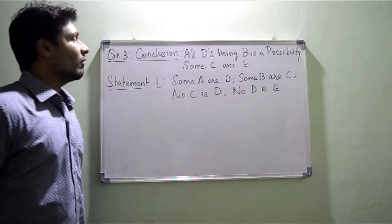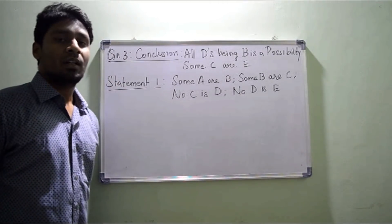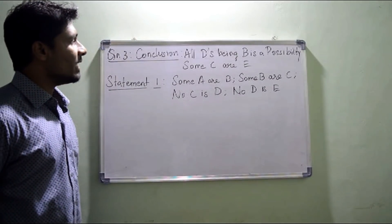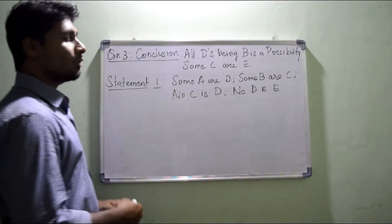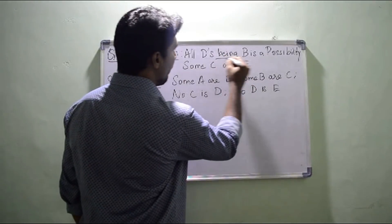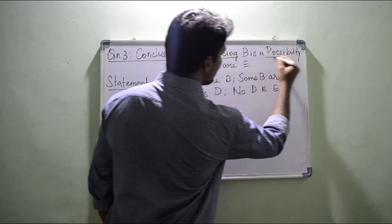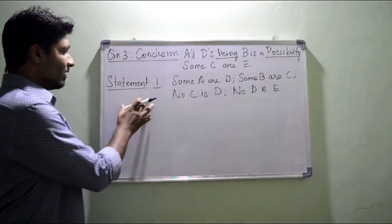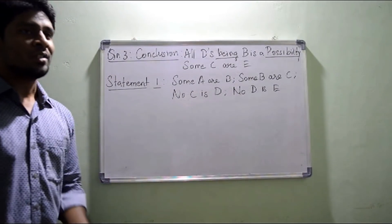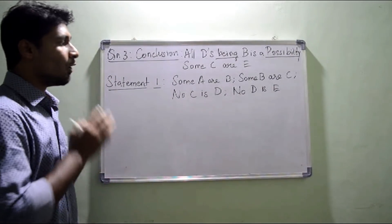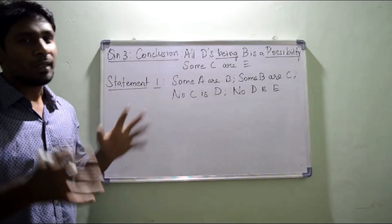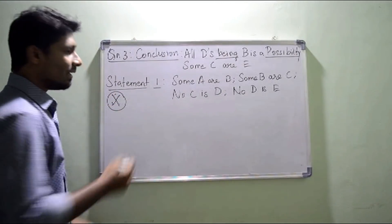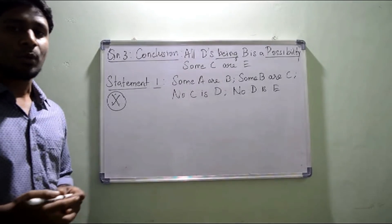Question number three from the same topic, reverse syllogism. The conclusions are given: conclusion one is all D being B is a possibility, and conclusion two is some C or E. This question actually has five statements, all very complex, and it's going to be a very important question. You can take this as a sample question for the toughest questions under this topic of reverse syllogism.